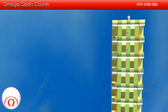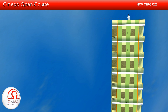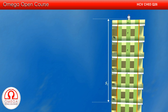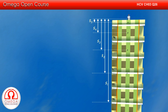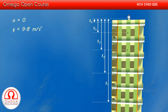The balls are being dropped at an interval of one second. Therefore, when the sixth ball is being dropped, the first ball has fallen for five seconds, the second ball for four seconds, the third ball for three seconds, the fourth ball for two seconds, and the fifth ball for one second. The initial velocity for each ball is zero and acceleration due to gravity is 9.8 m per second square.